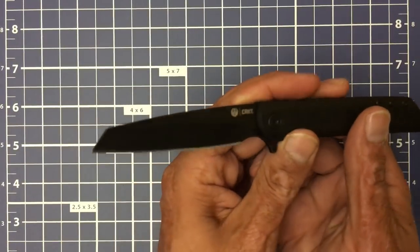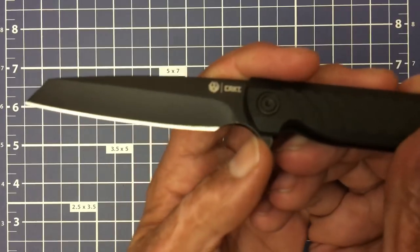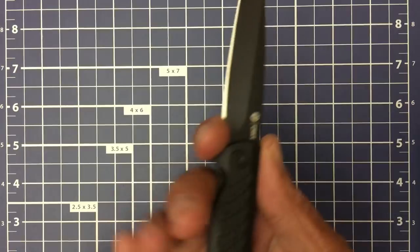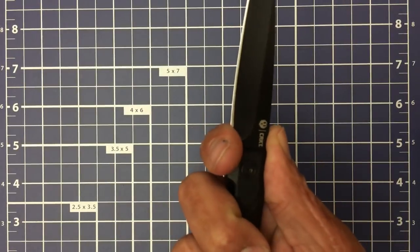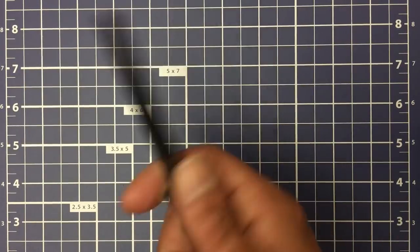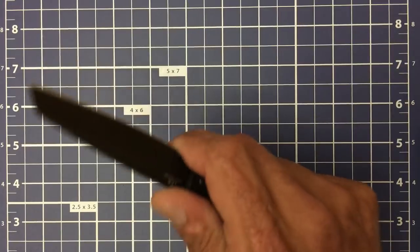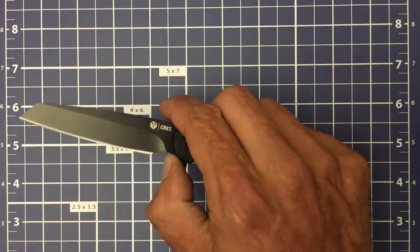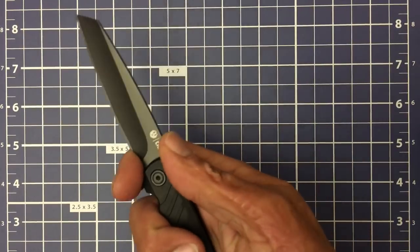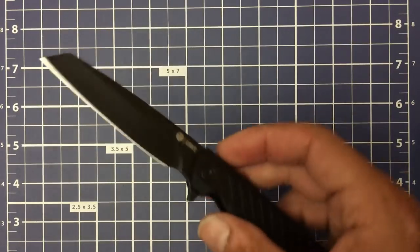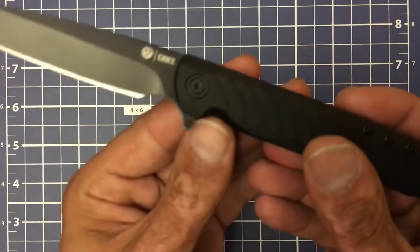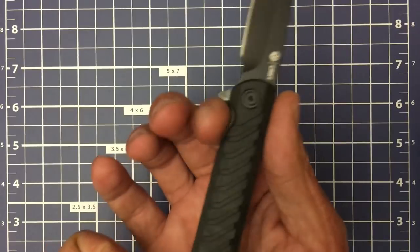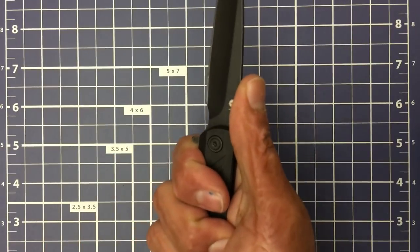You have this sharpening choil right here. And also, if you have thinner fingers like mine, which is still cutting it close, you can use it as a forward finger choil. But to err on the side of caution, I would say that's just a sharpening choil, or be careful if you use it as a forward finger choil. You have no jimping to speak of, but you do have the flipper tab that acts as a guard right there in this choil area. So you are locked in pretty nicely there.